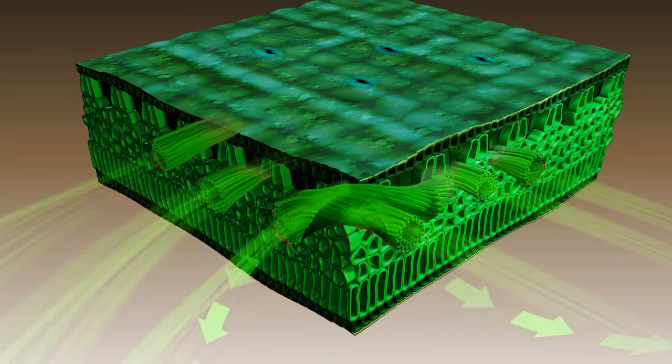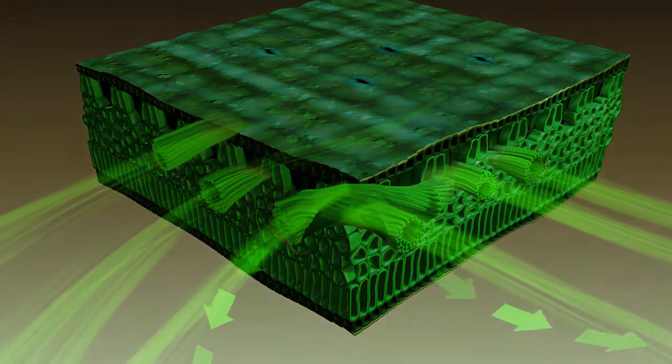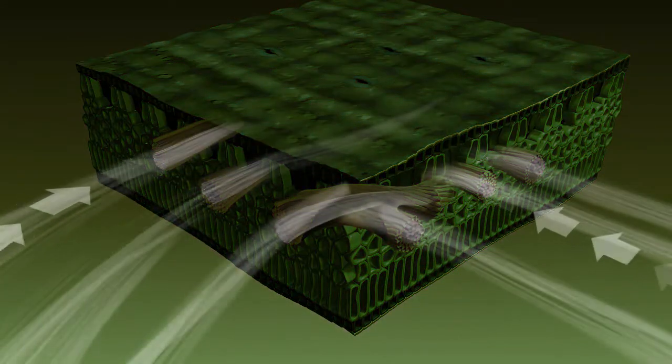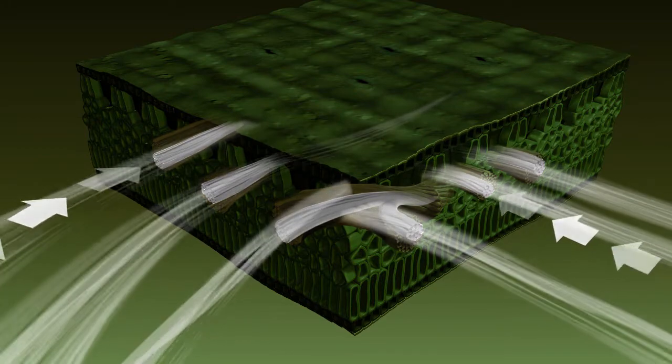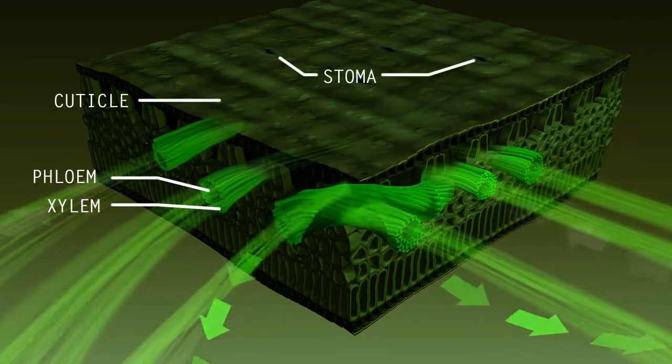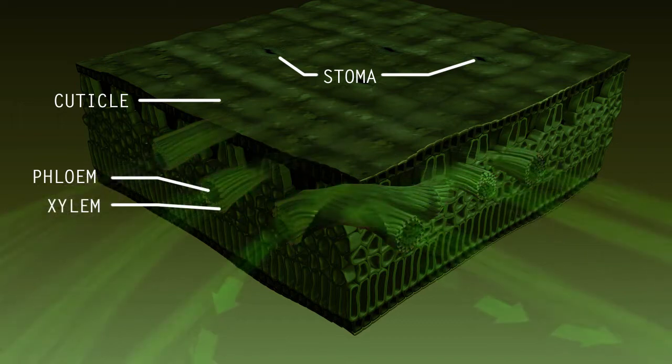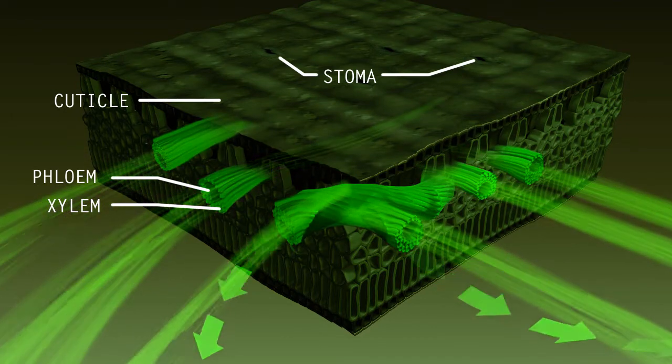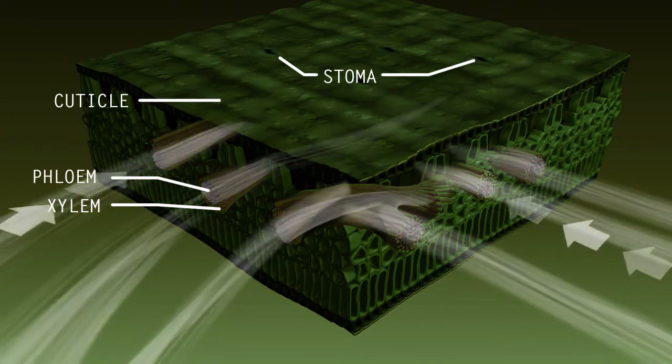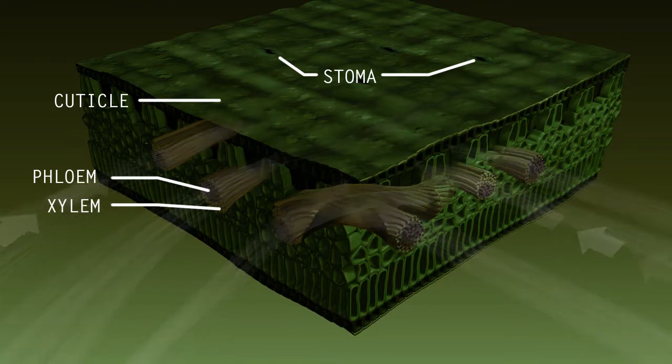As a sugar alcohol, the plant sees Maniflex as a natural photosynthetic product and thus allows it into both the xylem and phloem without requiring any extra energy from the plant to break it down. By traveling through both systems, nutrients are more effectively delivered to the active metabolic sinks.